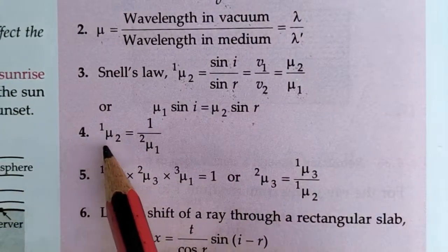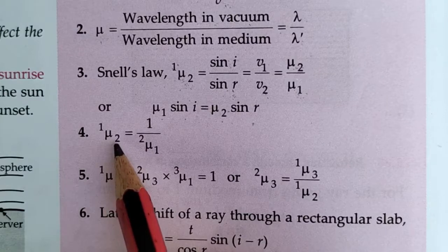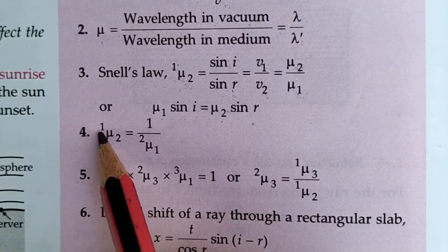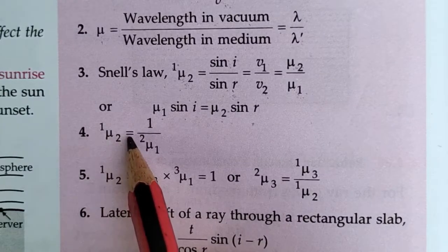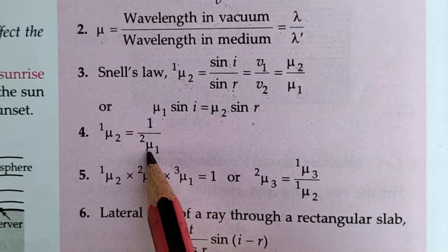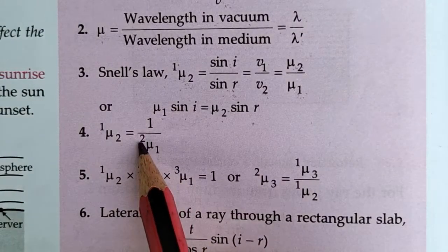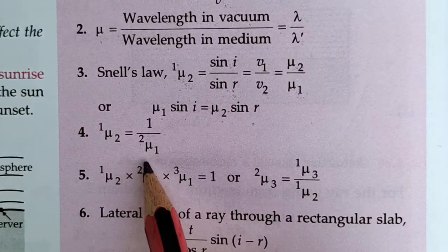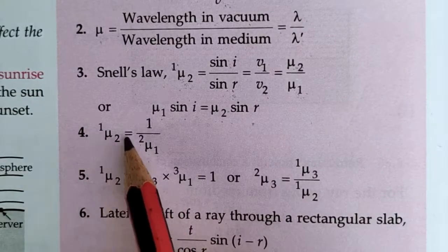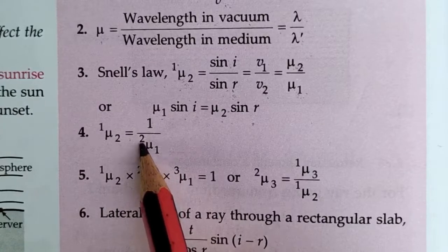The fourth formula: the refractive index of the second medium with respect to the first is the reciprocal of the refractive index of the first medium with respect to the second. That means mu₂₁ equals 1 divided by mu₁₂.